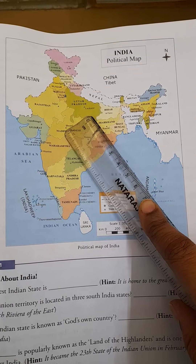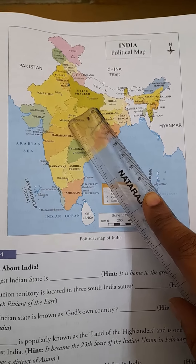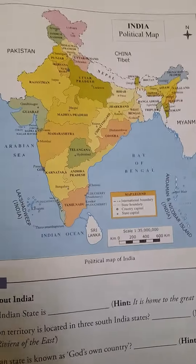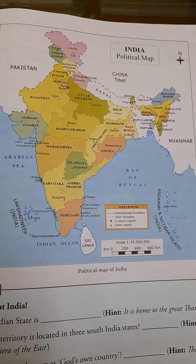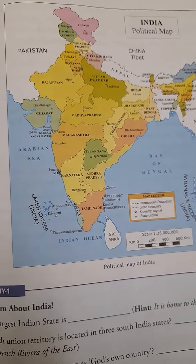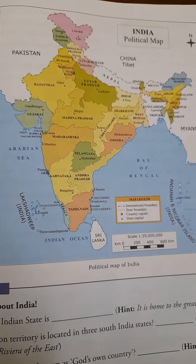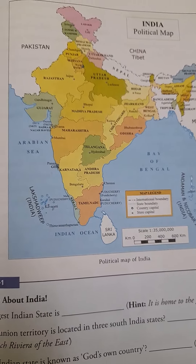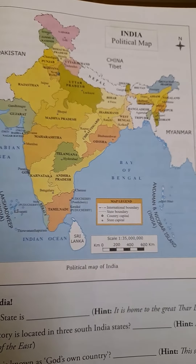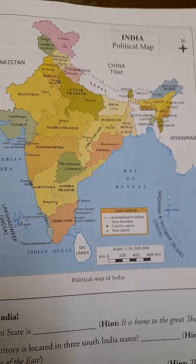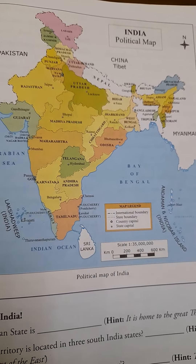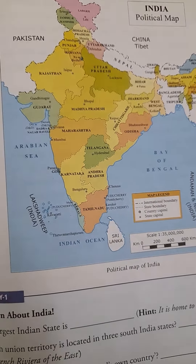Union territories — by the name it resembles that these are regions which are governed and administered by the Union government. It means they don't have any specific state government. All the rules and regulations are made by the Union government and are followed there.